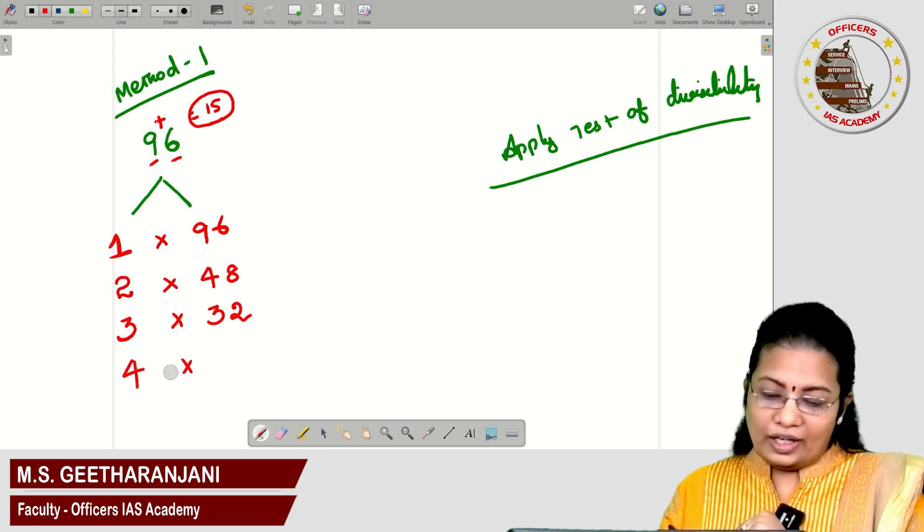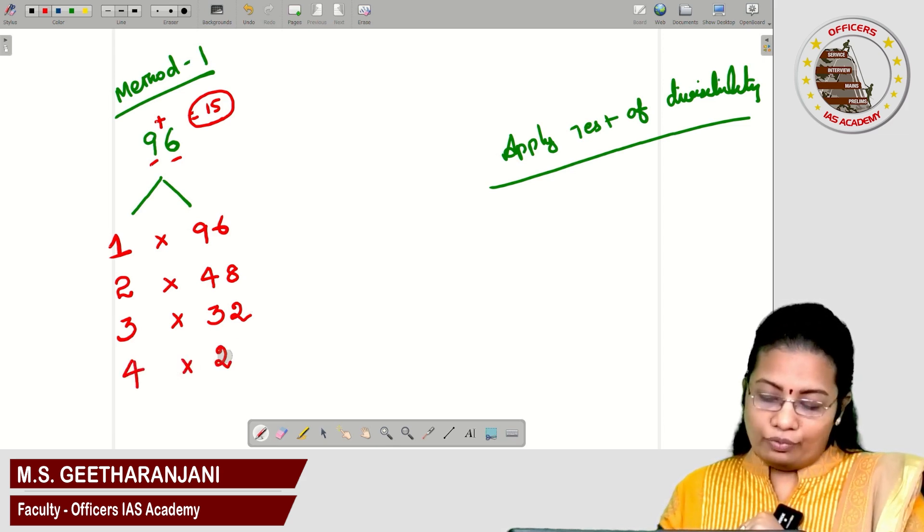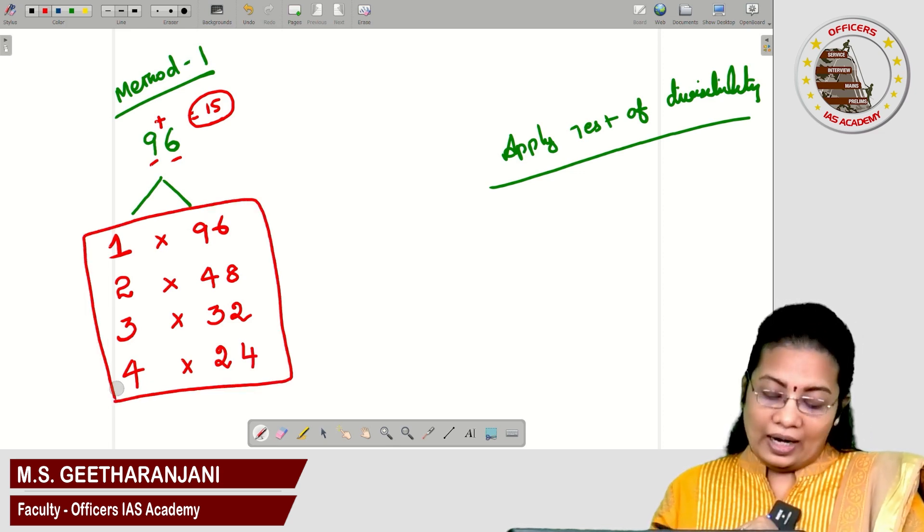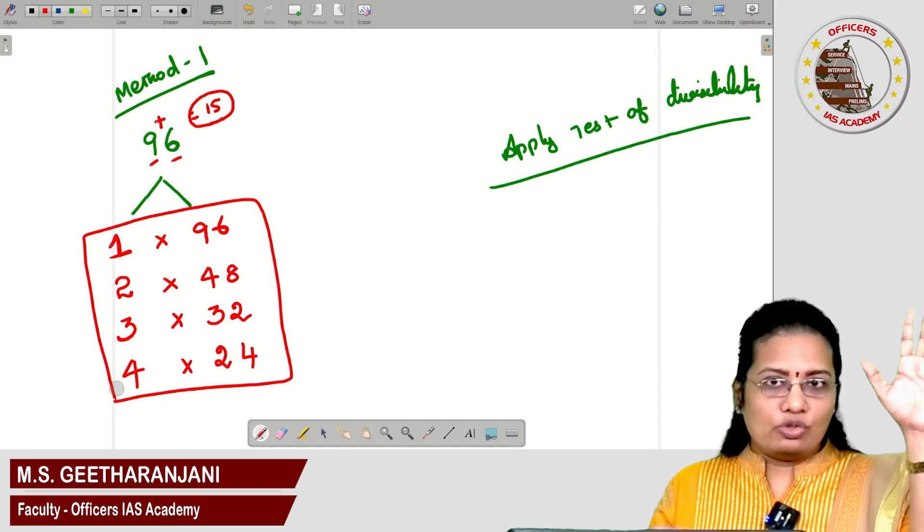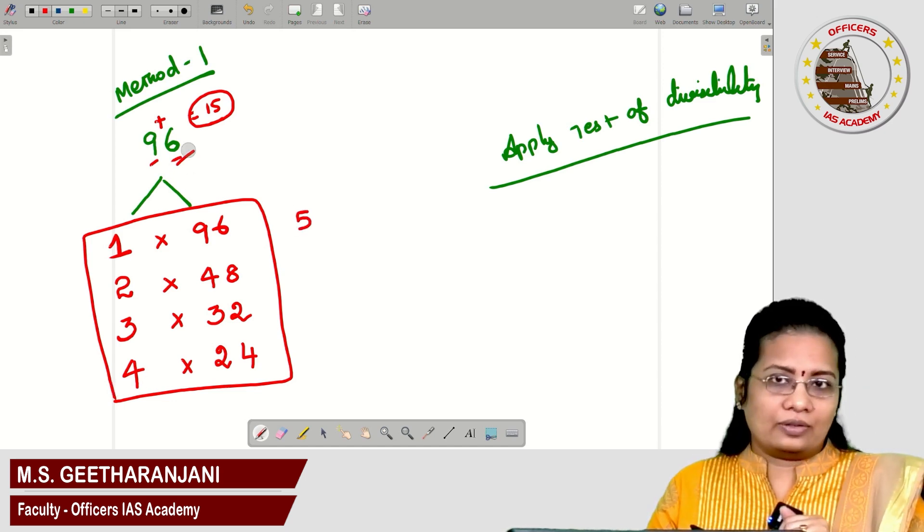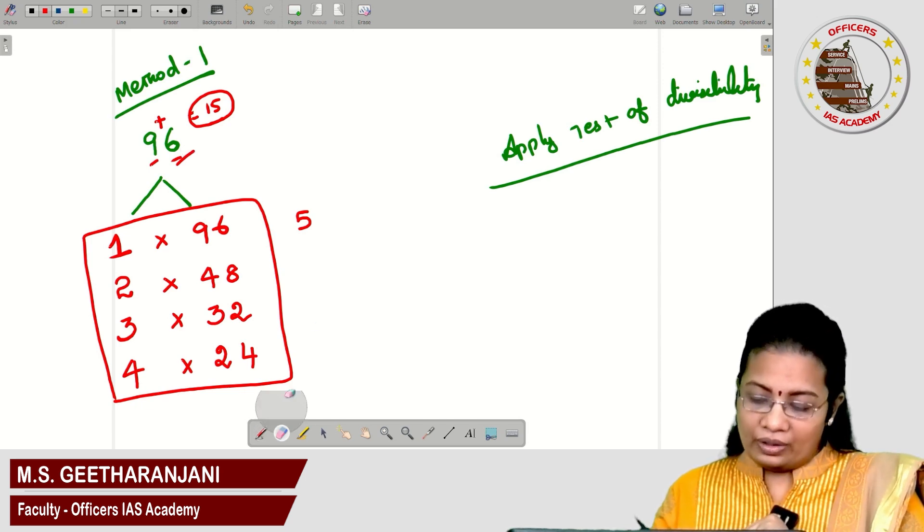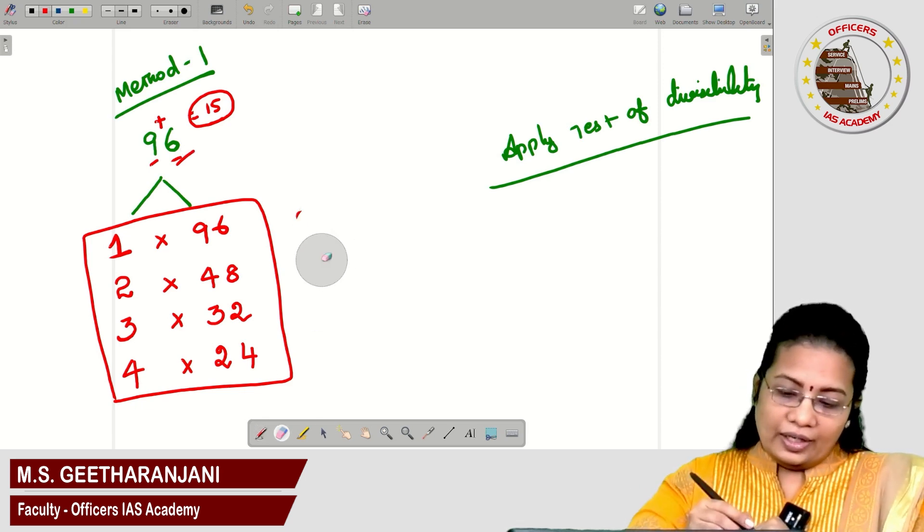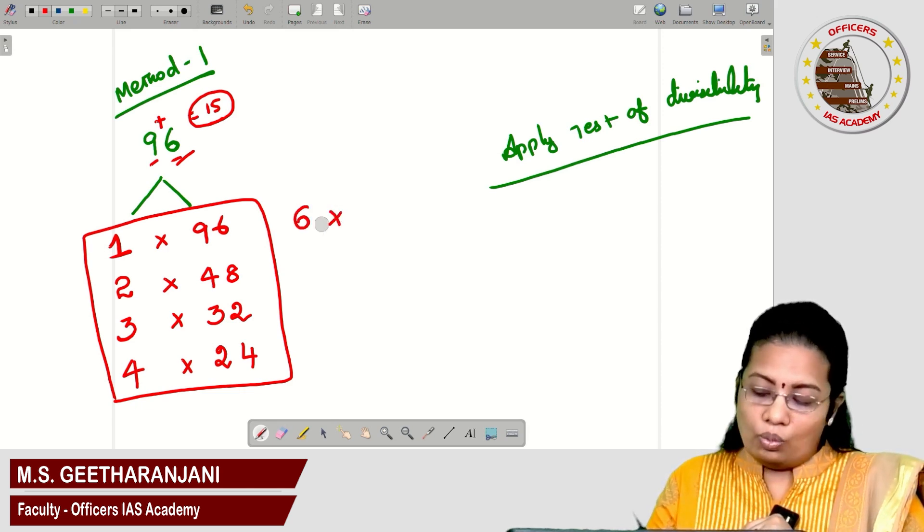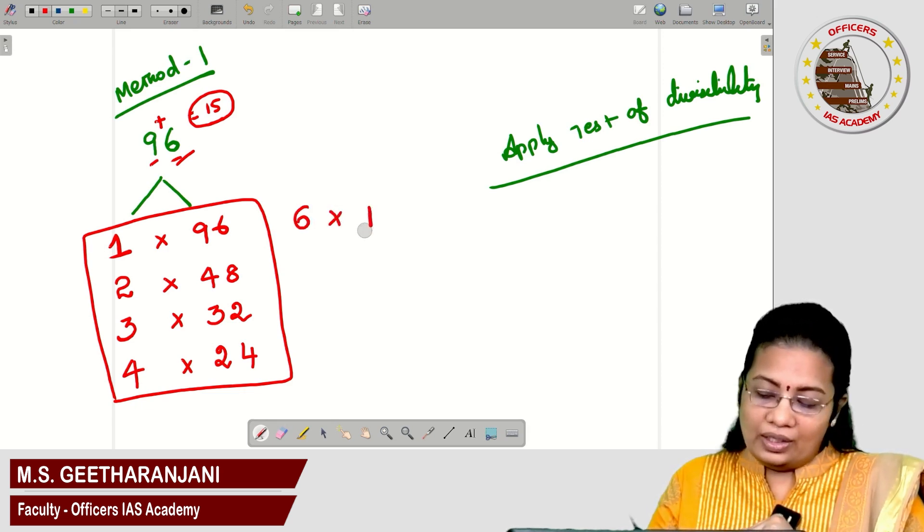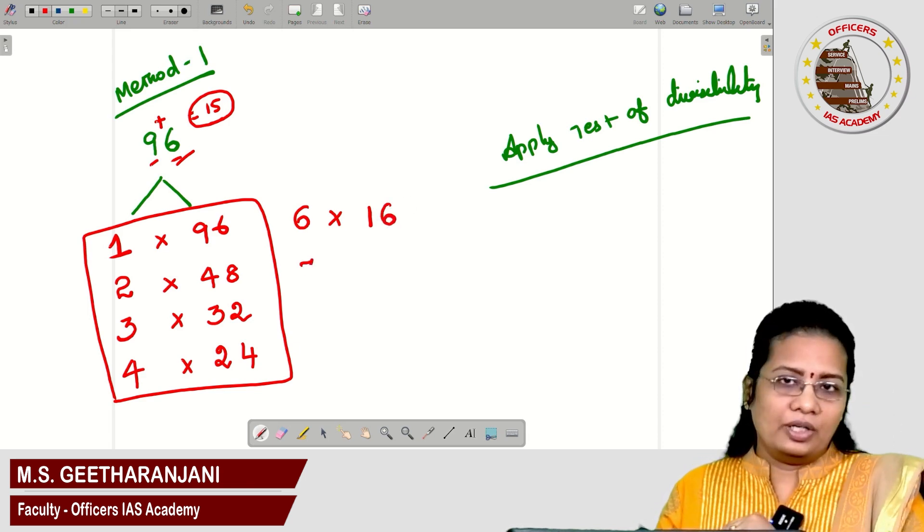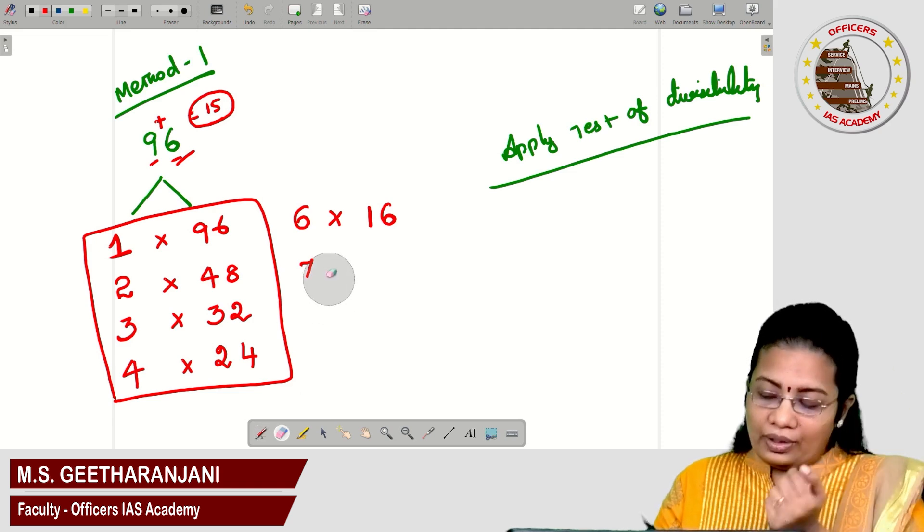Next one is 4. 4 into what? 4 times 4 is 16. These are the values as of now I got. Next set 5, I am going to check. But 5 is not divisible in 96 as the last digit is not equal to 0 or 5. We can eliminate that. The next one is 6. 6 into 16 is 96. Next set 7, 7 is not divisible in 96 at all, so leave that.